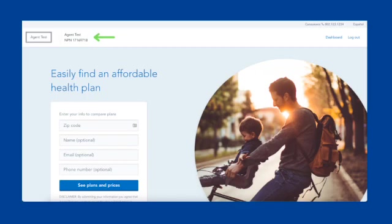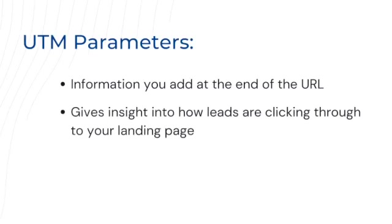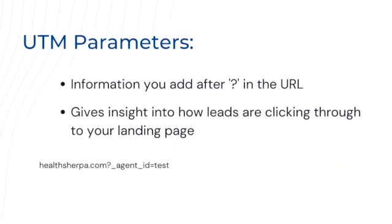This is all well and good, but if you are marketing your business and using this landing page, you're going to want to know where your leads are coming from and why. That's where UTM parameters come in. UTM parameters are structured bits of information you can add to the end of your landing page's URL that give you contextual information about how your leads are clicking through to your site.